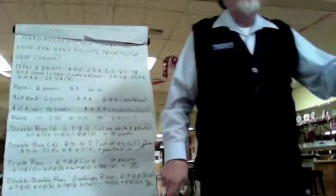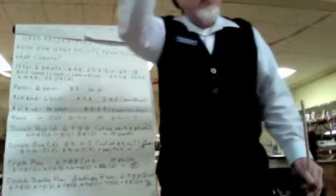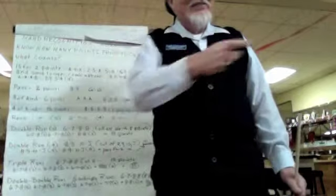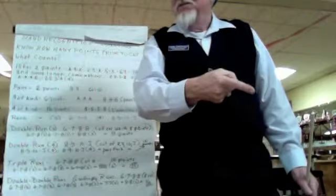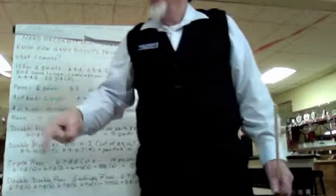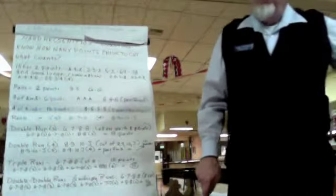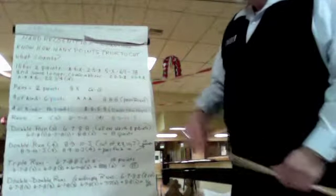When we get to four of a kind, you'll find that there's six pairs. And when thinking of four of a kind, we don't do a triangle, we do a square. One pair, two pairs, three pairs, four pairs, diagonal five pairs, six pairs. Six times two is twelve. That's why four of a kind is twelve. It's because there are six pairs.